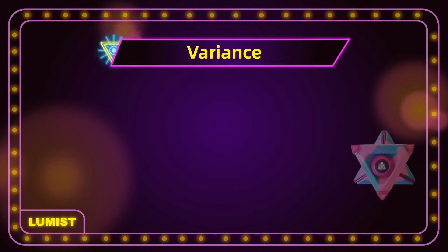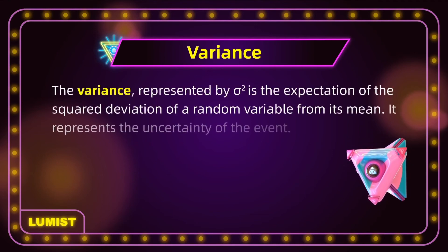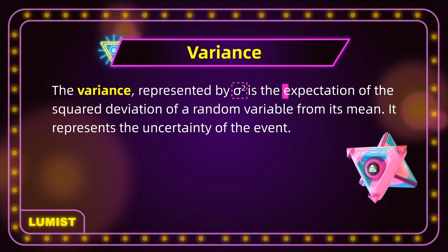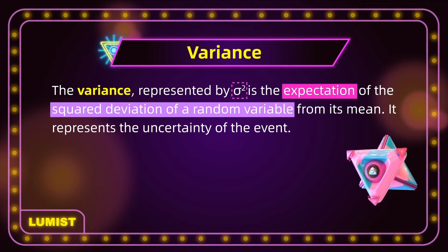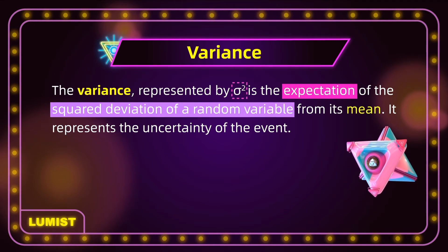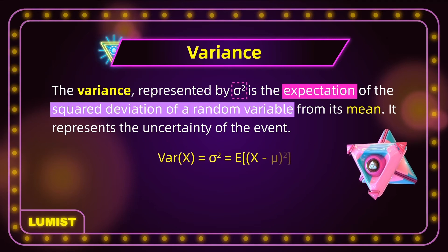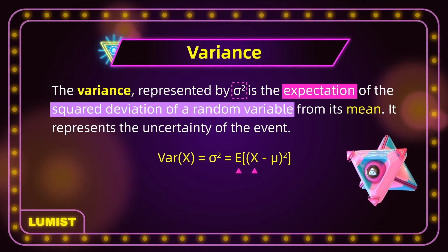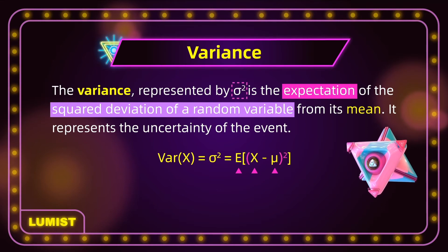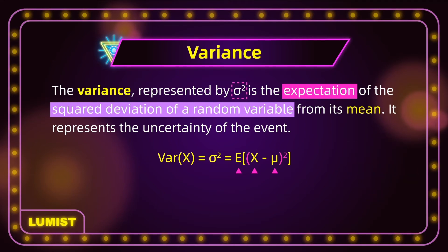Another important quantity is the variance of a random variable. The variance, represented by sigma squared, is the expectation of the squared deviation of a random variable from its mean. It represents the uncertainty of the event. So in mathematical notation, we have the expectation of (x minus the mean) squared. The main idea behind variance is: you take the values of your data points, subtract the mean from them, and square them. Your variance is the expected value of that.